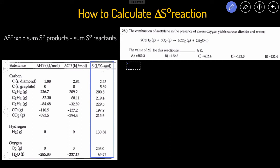We'll start with the brackets to enclose the sum of the products. We have 4 CO2, multiply the value of each CO2, which is 213.6, plus 2 times the value of H2O liquid, which is 69.91. And that's going to be it for the sum of the products, now minus the sum of the reactants.